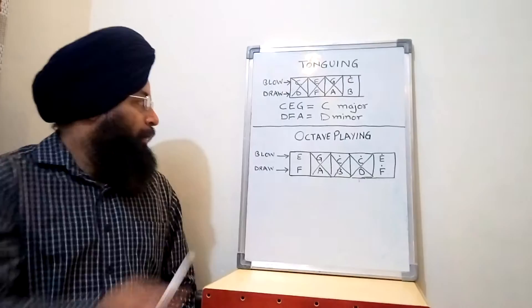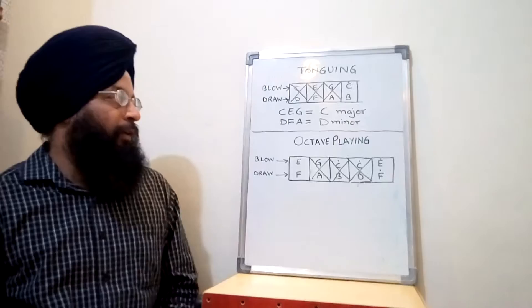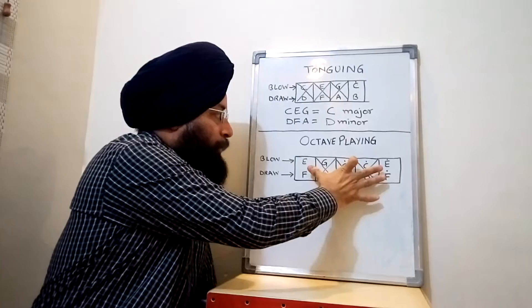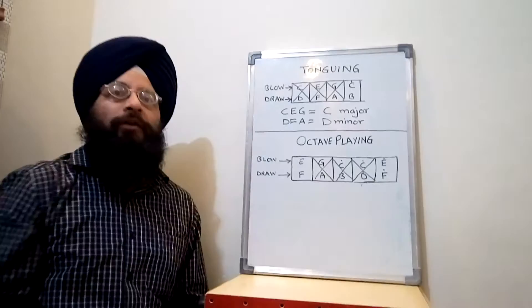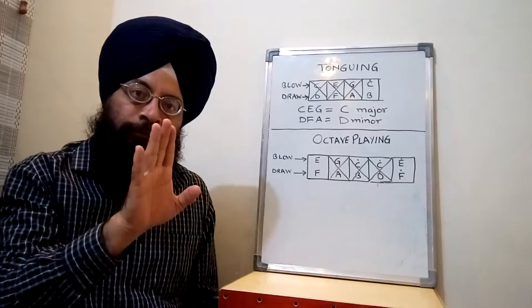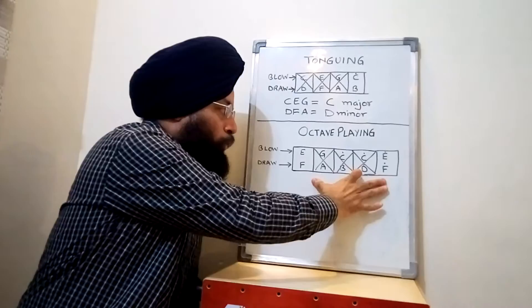As it is clear from the name itself, in octave playing you block the three holes in between two similar notes - the two same notes, one of the higher octave, other one of the lower octave. In between, by covering the three holes with your tongue, you are able to blow or draw the two notes of the same pitch from two different octaves simultaneously.